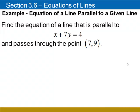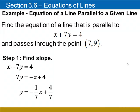To find the equation of a line, you need to know the slope and a point on the line. And we already have a point, (7, 9). So let's find the slope of this line by solving the equation for y. Subtract x, divide through by 7.